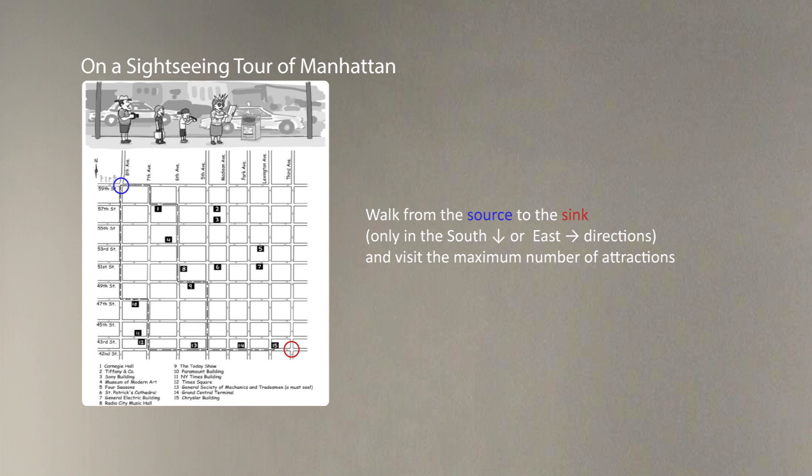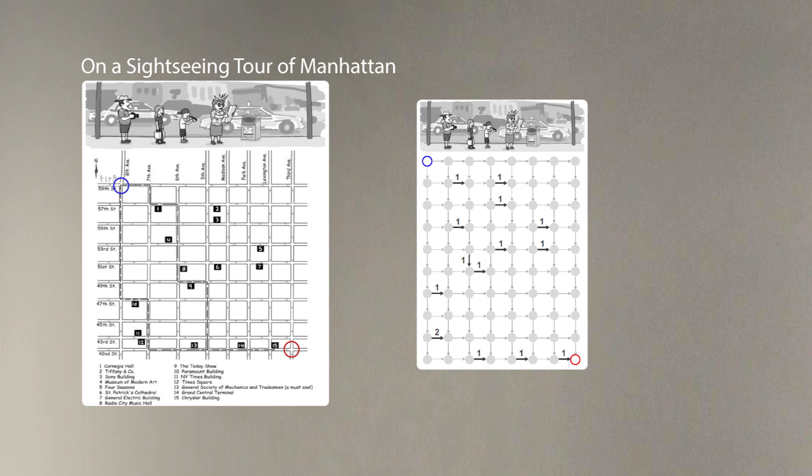We are now on a sightseeing tour in Manhattan. Our goal is to walk from the intersection shown in blue to the intersection shown in red and to visit as many attractions as possible. The only restriction is that we can either move south or east. What should be our strategy to visit the maximum number of attractions on this trip?